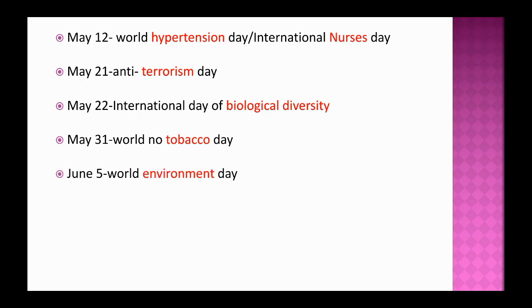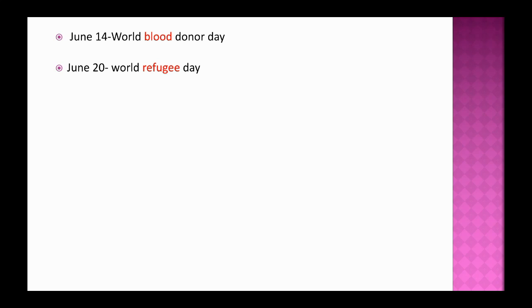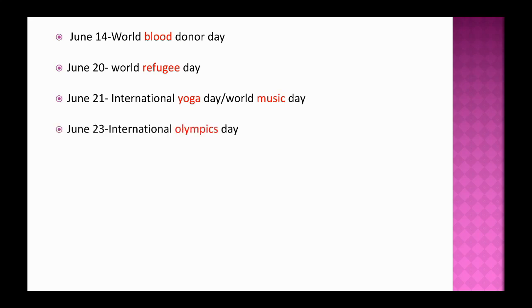5th June is celebrated as World Environment Day. 8th June is World Oceans Day. 12th June is observed as World Day Against Child Labour. 14th June is World Blood Donor Day. 20th June is World Refugee Day. 21st June is International Yoga Day and also World Music Day. 23rd June is International Olympics Day.